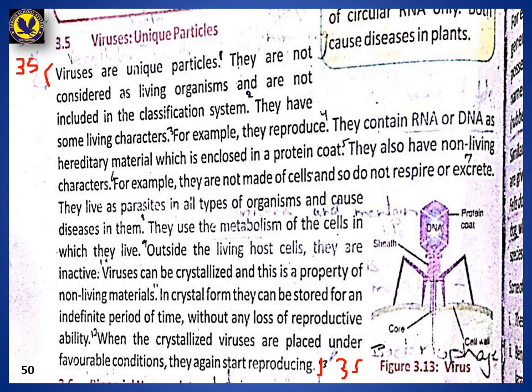Viruses are unique particles. They are not considered as living organisms and are not included in the classification system. They have some living characteristics — for example, they reproduce, and they contain RNA or DNA as hereditary material, which is enclosed in a protein coat.